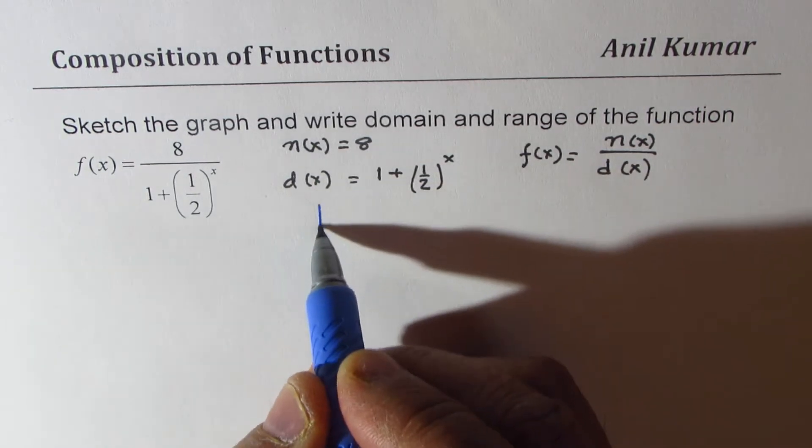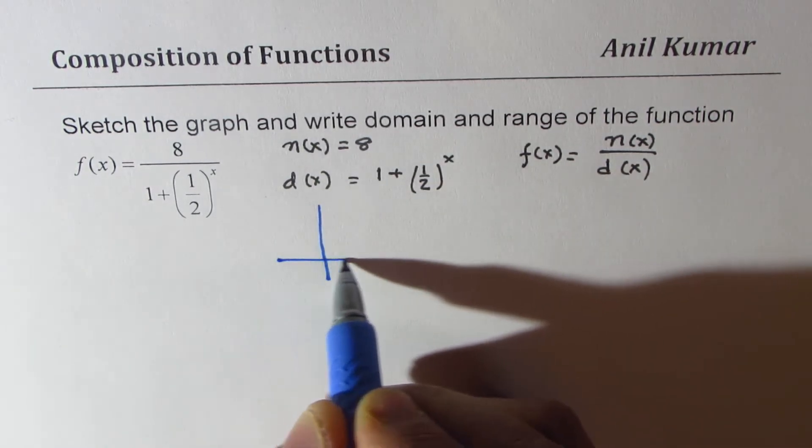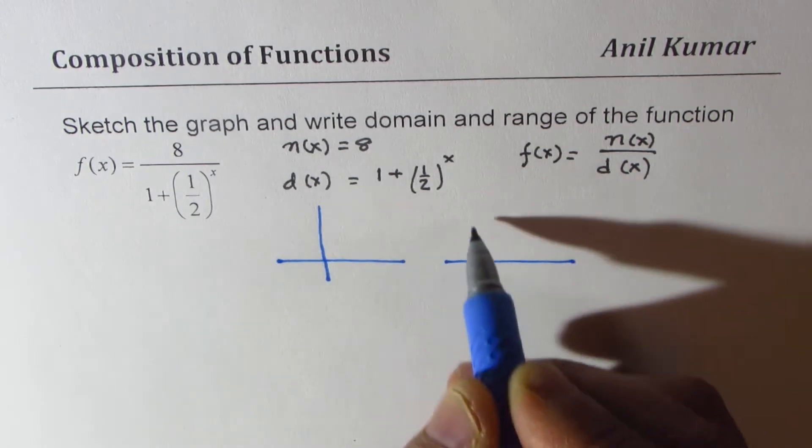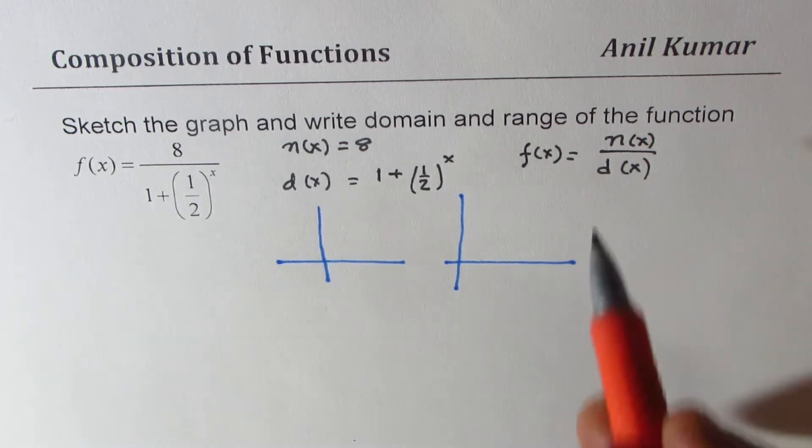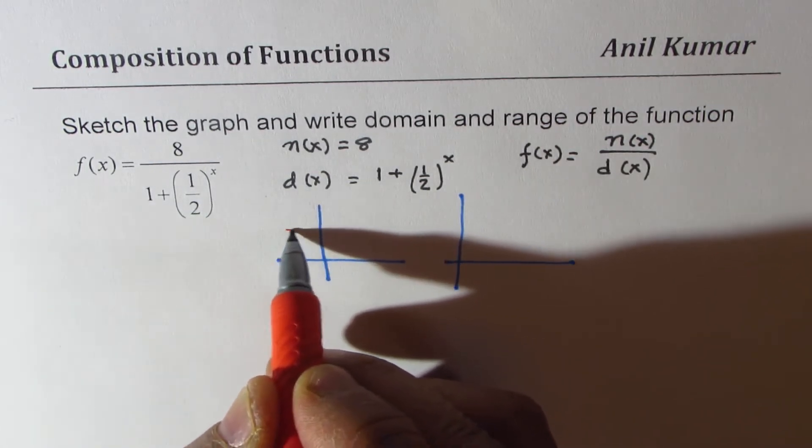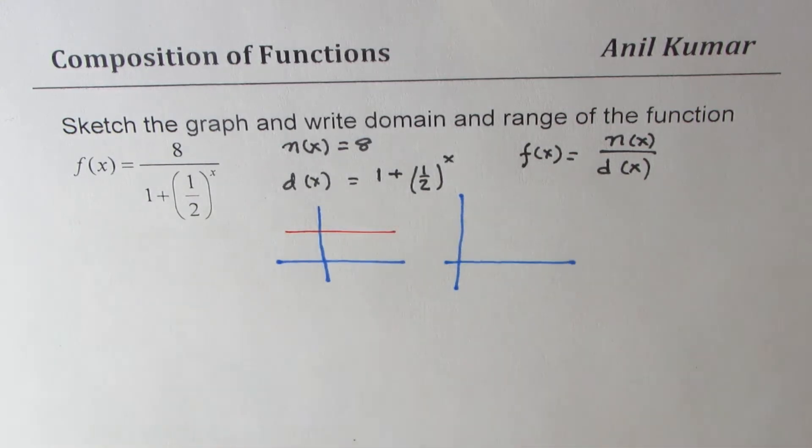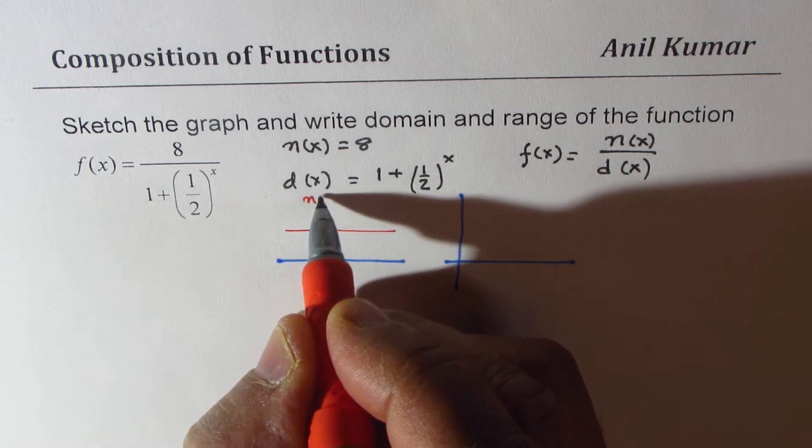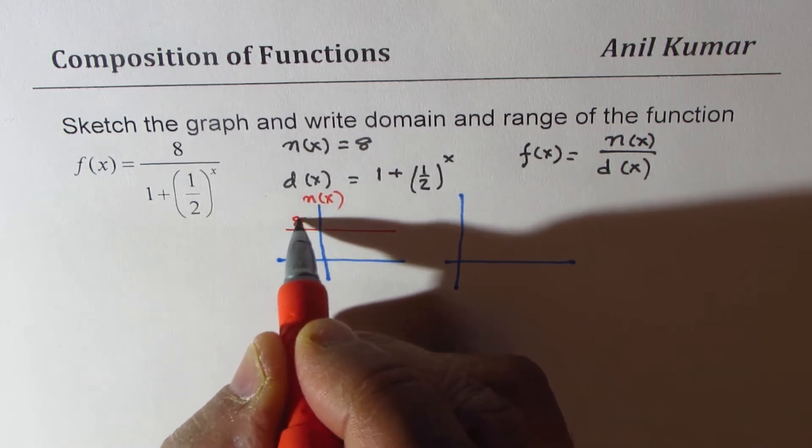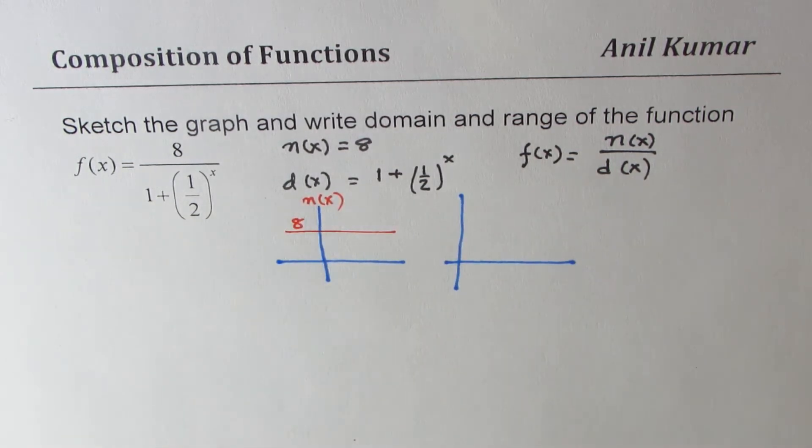What we'll do here is we'll sketch first these two. When I say the numerator is 8, that means it's kind of like this, let's say this is 8. So this is the graph for the numerator, let me write n(x) which is 8.